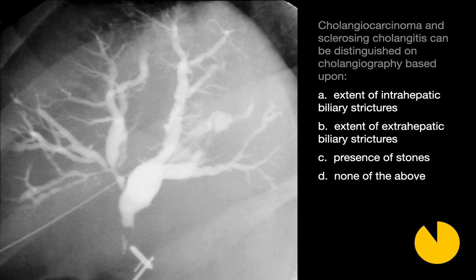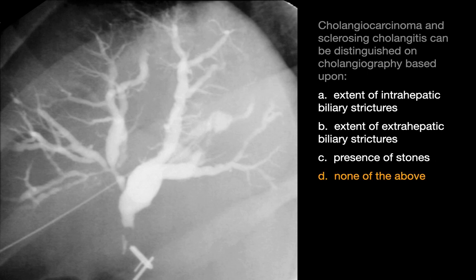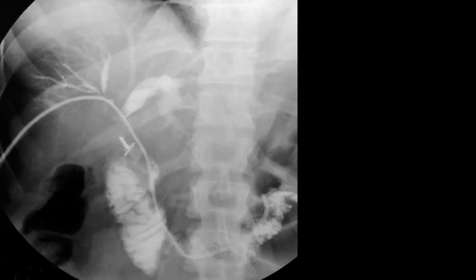Cholangiocarcinoma and sclerosing cholangitis can be distinguished on cholangiography — and the best answer is D, none of the above. On this percutaneous transhepatic cholangiogram, we have dilated intrahepatic ducts secondary to a common hepatic duct stricture, which was decompressed via insertion of an external-internal percutaneous biliary drain.